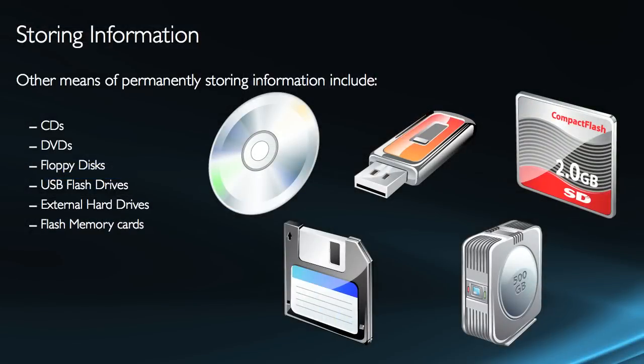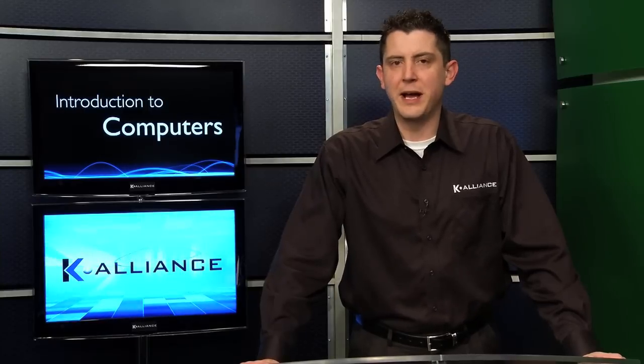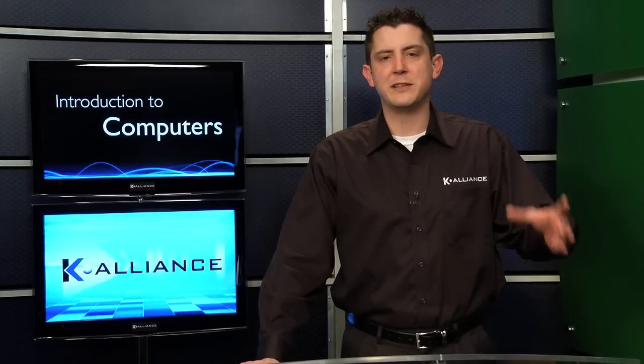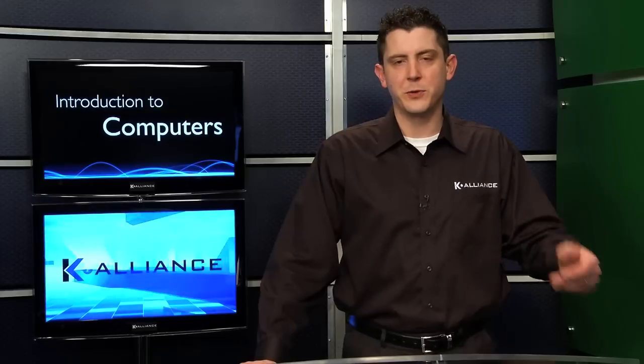Floppy disks have greatly lessened in popularity — in fact, most computers nowadays don't even have a floppy disk drive. There have been many floppy disk drives in the past, but they're all subject to the primary disadvantage of a lack of storage space. A floppy disk drive can hold only one and a half megabytes of information. To give you some idea, a typical 8 to 10 megapixel camera is probably taking photos larger than that single disk.